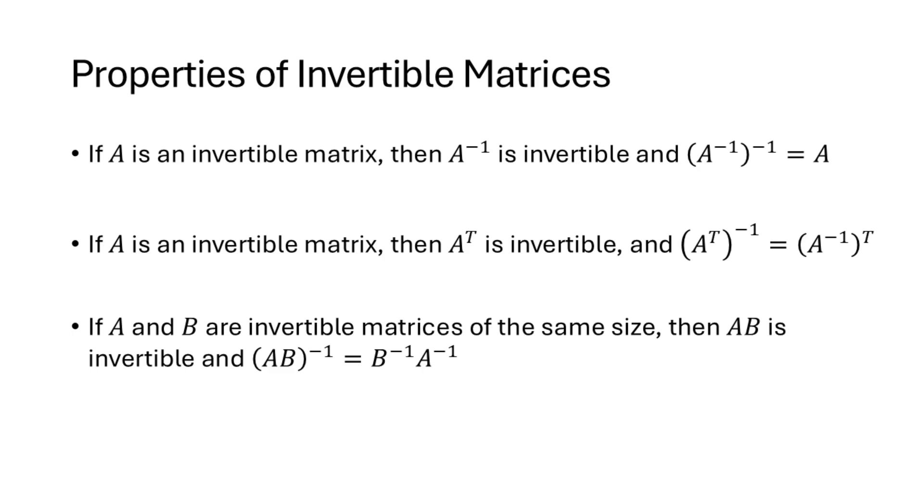Now some other properties of invertible matrices are that the inverse of the inverse is the original matrix, so A inverse inverse is just A. Inverse and transpose interact nicely with each other, so A transpose inverse is equal to A inverse transpose. And when A and B are both invertible matrices of the same size, then AB inverse is B inverse A inverse.